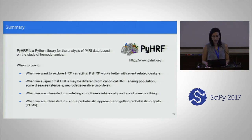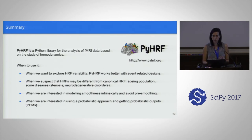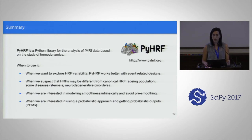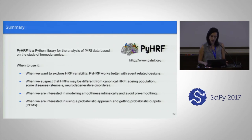We can also use it when we are interested in modeling smoothness intrinsically and avoiding pre-smoothing. In GLM we pre-smooth data with a Gaussian kernel, which is quite rough. Here we model smoothness inside our algorithm, which is interesting but also what makes the algorithm computationally expensive. And we can use it when interested in a probabilistic approach and getting probabilistic outputs such as posterior probability maps.